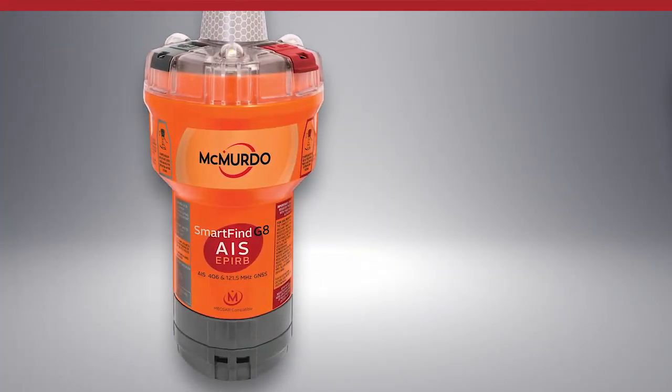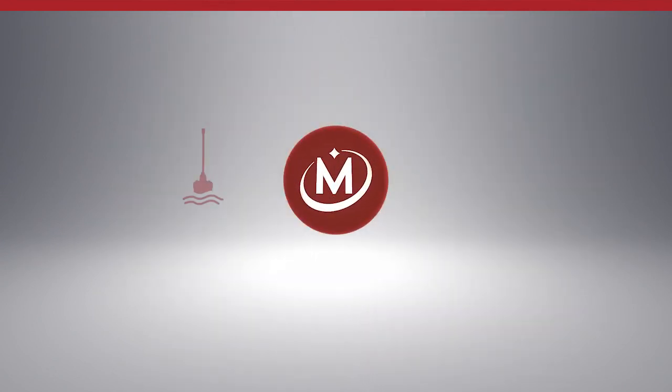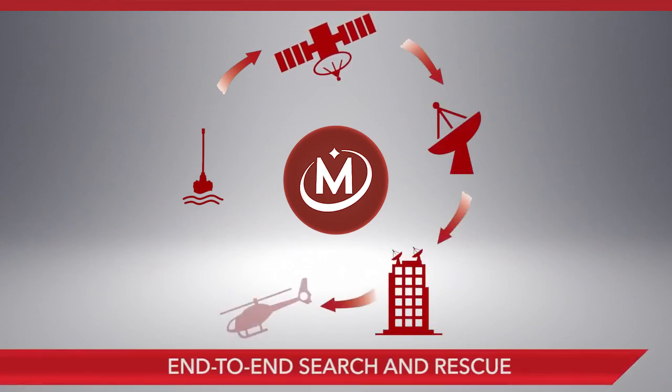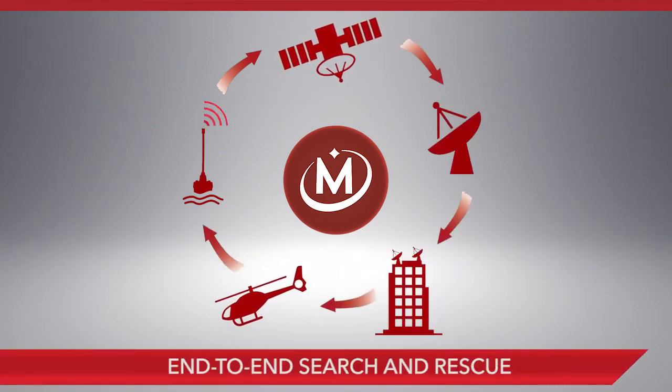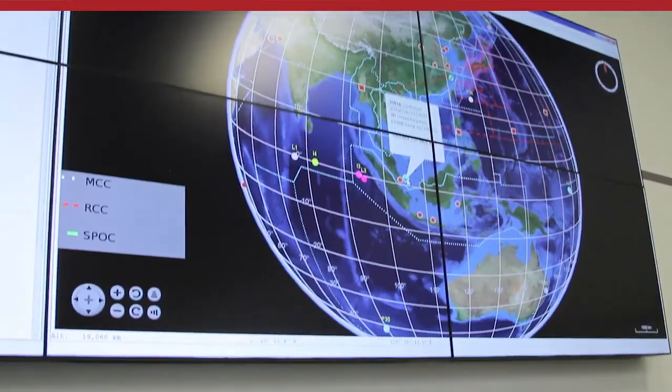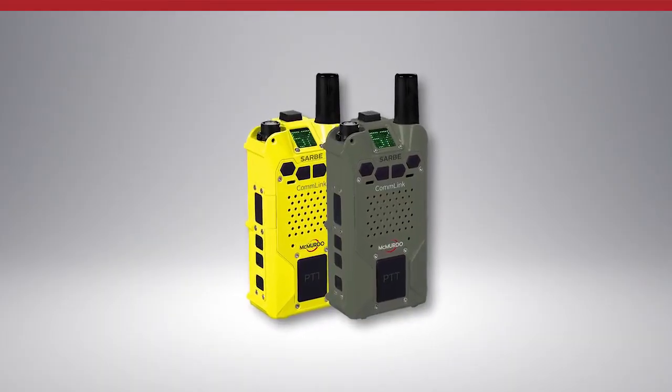Finally, the SmartFind G8 and Canad SafePro EPIRBs are part of the powerful McMurdo ecosystem. McMurdo is the only provider of an end-to-end search and rescue ecosystem, including distress beacons, satellite ground stations, mission control and rescue coordination center systems, and rescue response products.